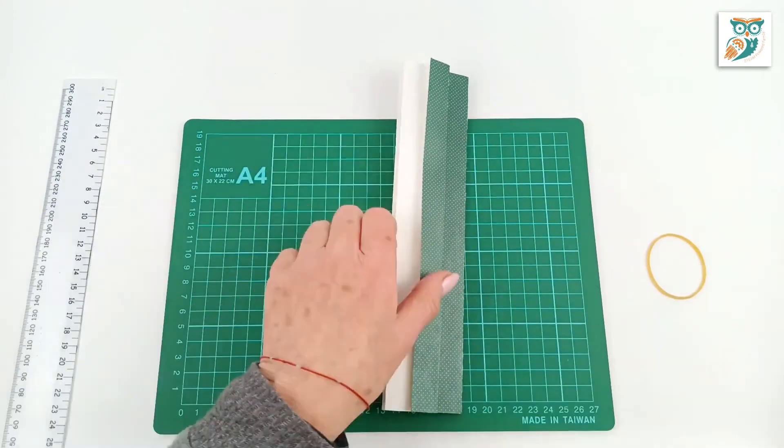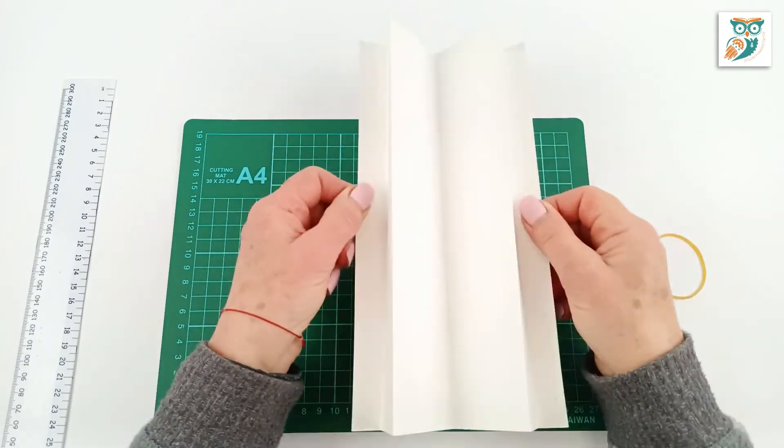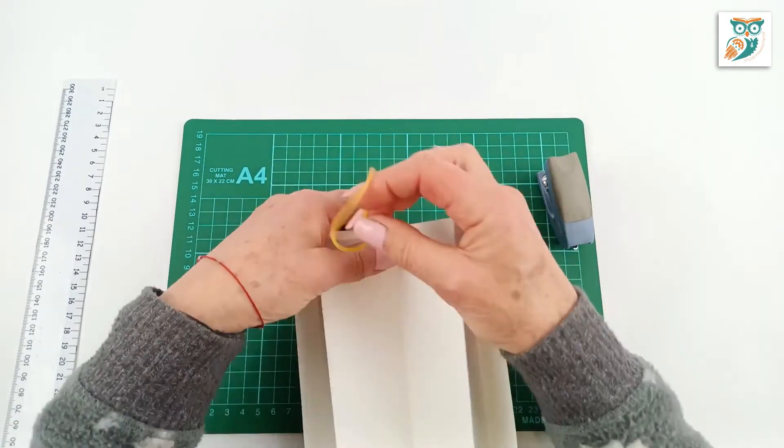There we go. Look at that. And then we open it up. We've got a nice little kind of xylophone shape.